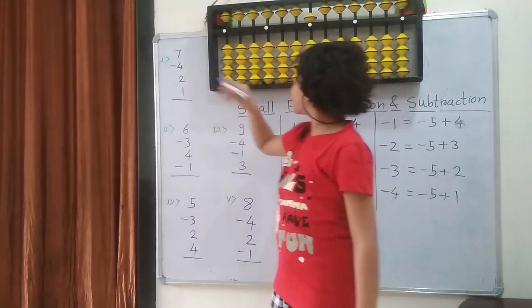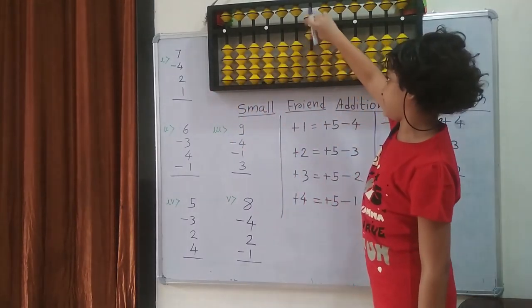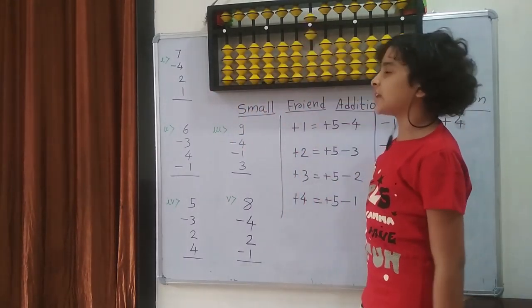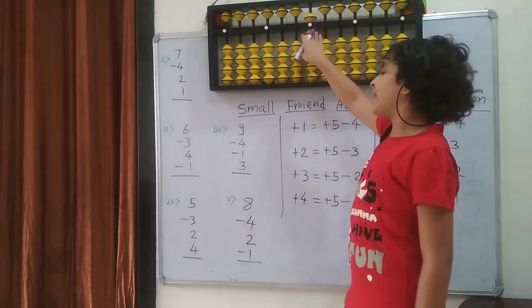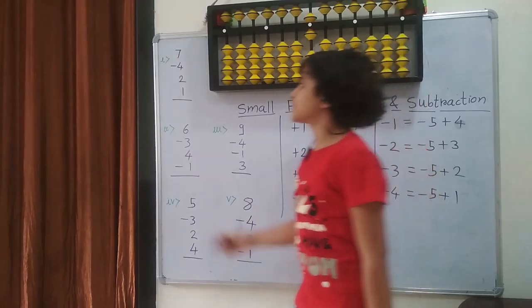Then I have to again add 1. So the answer is 5 and 1, which is 6.